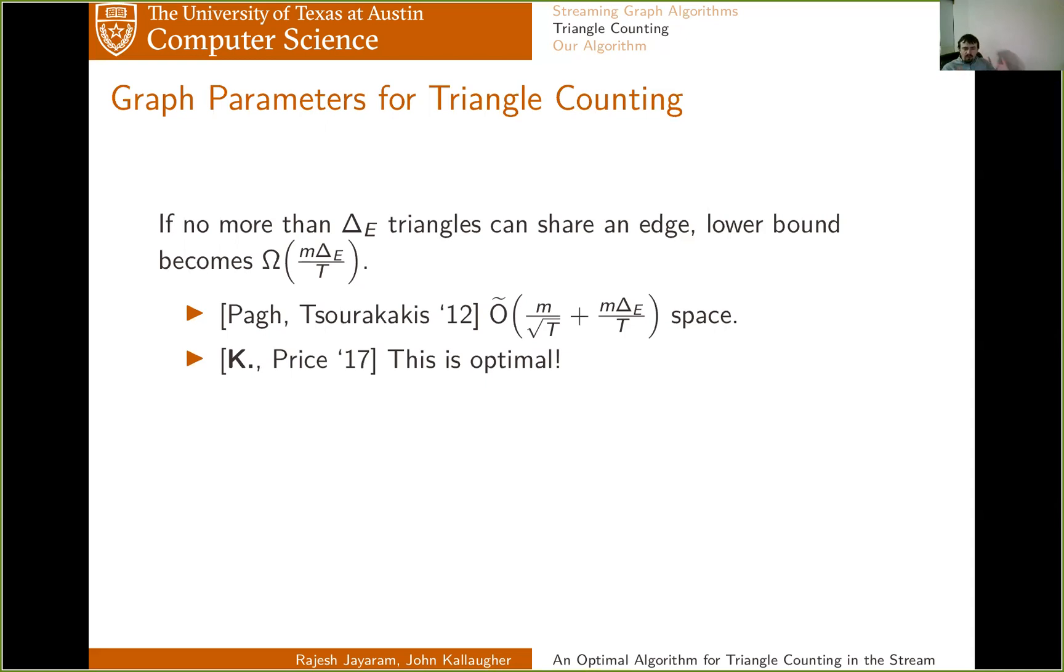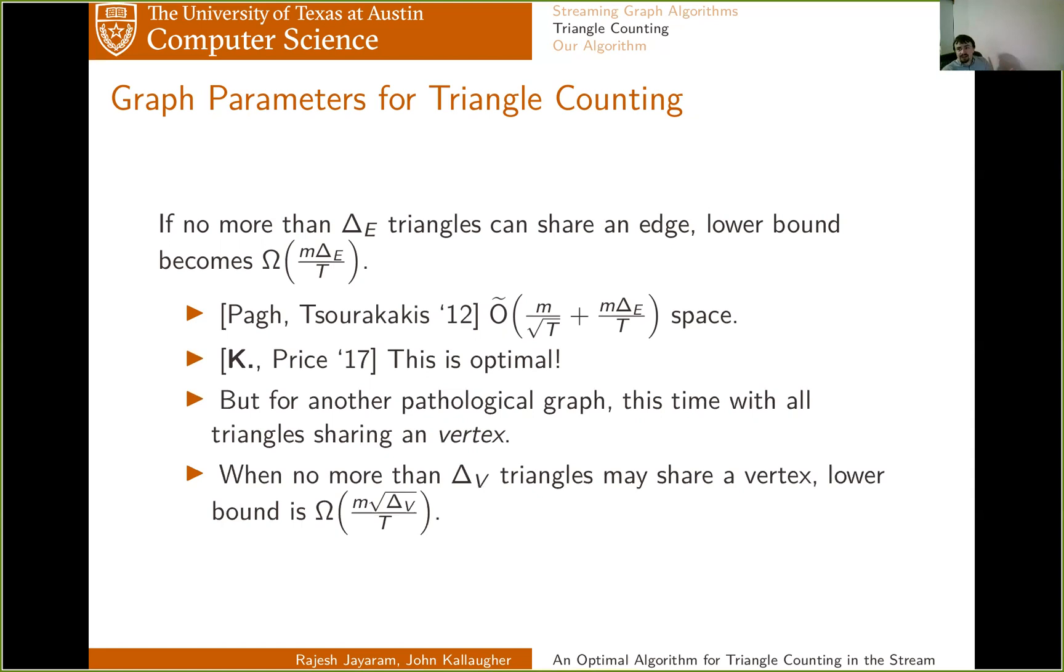But this lower bound instance, like the lower bound instance we saw before, it's another pathological graph. This time, the unusual structure is that every single triangle in the graph intersects at a single vertex. And so naturally, you ask what happens if we say that no more than delta V triangles can share a single vertex? And it turns out what you get is that the lower bound now becomes M square root delta V over T, rather than M over root T.